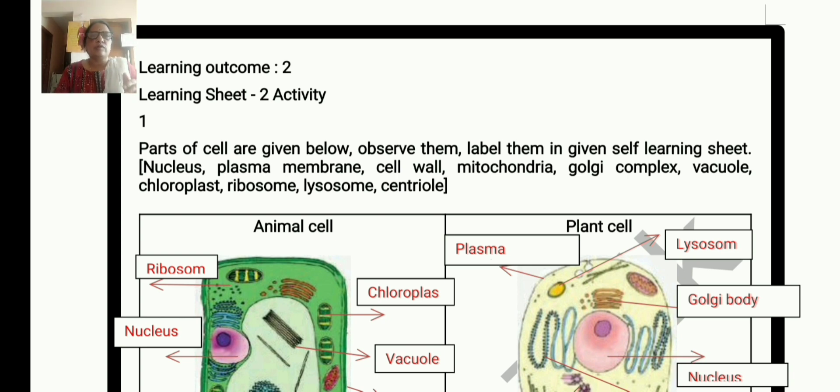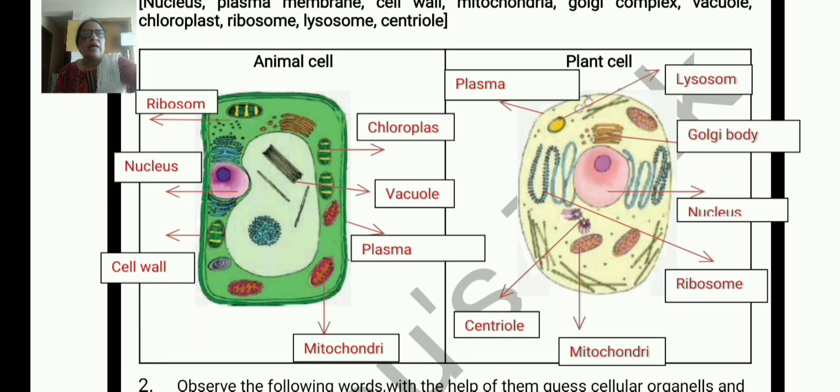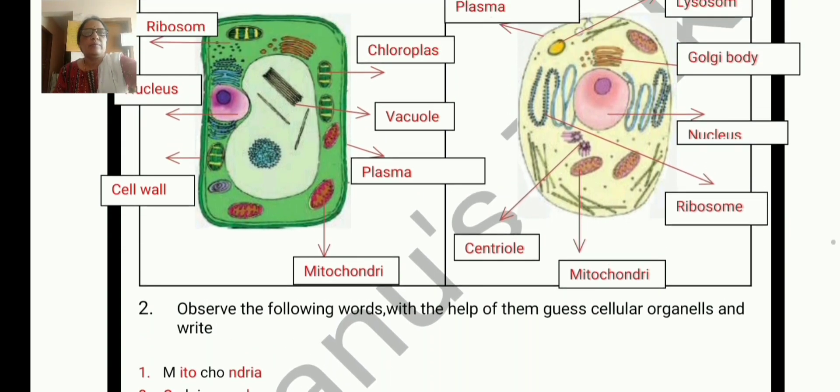Learning outcome 2, learning sheet 2, activity 1. Parts of cells are given below. Observe them. Label them in given self-learning sheet. So here is a picture. Nucleus, plasma membrane, cell wall, mitochondria, Golgi complex, vacuole, chloroplast, ribosome, lysosome and centriole. Both in animal cell and plant cell mitochondria are present. Sorry for that. So label them.